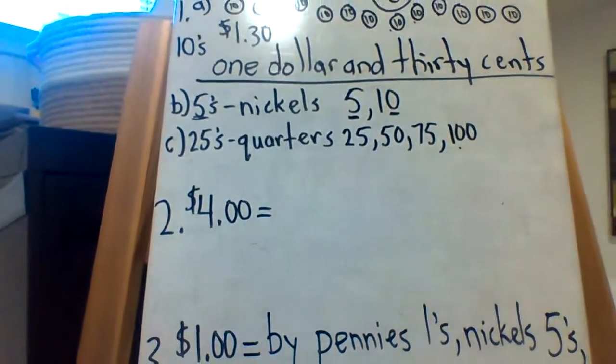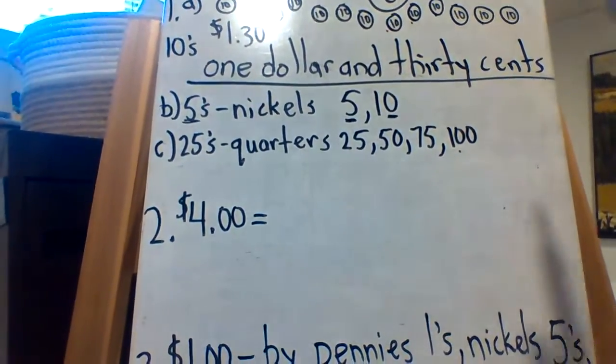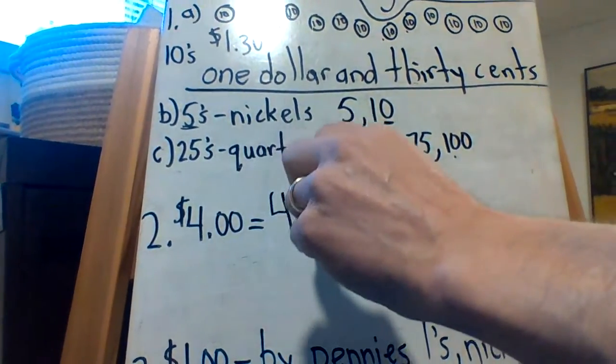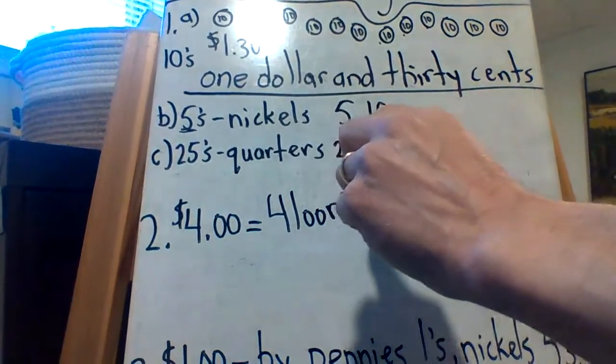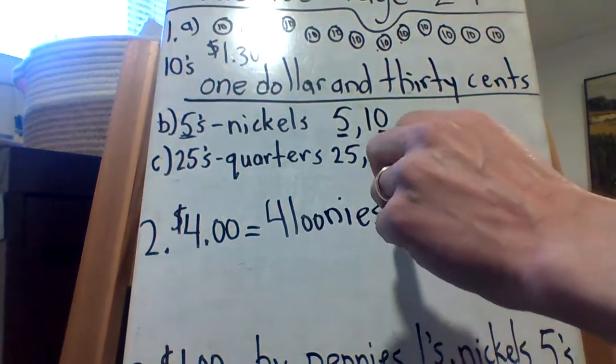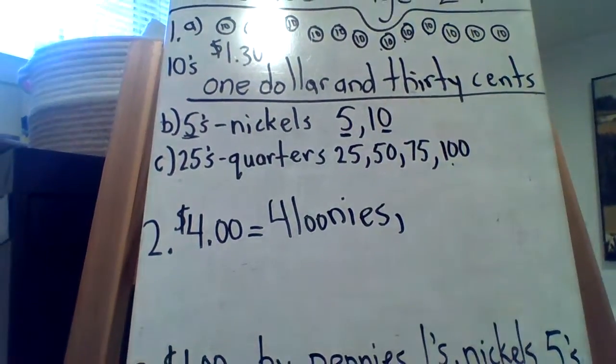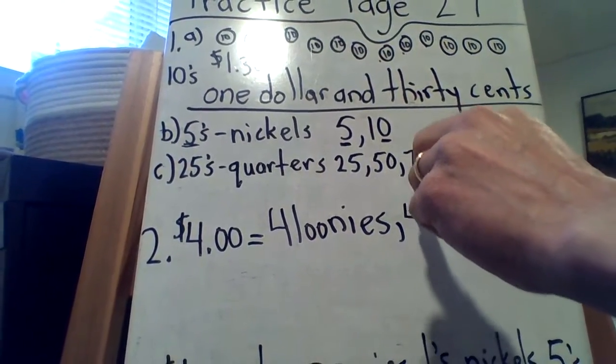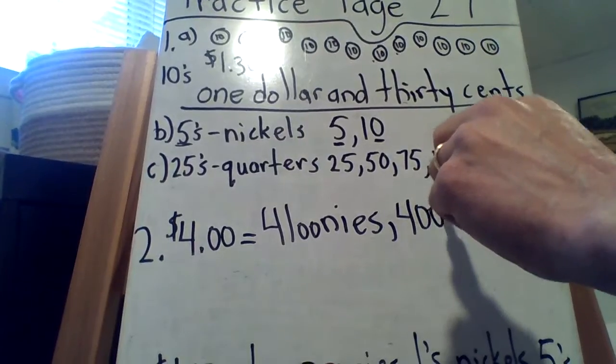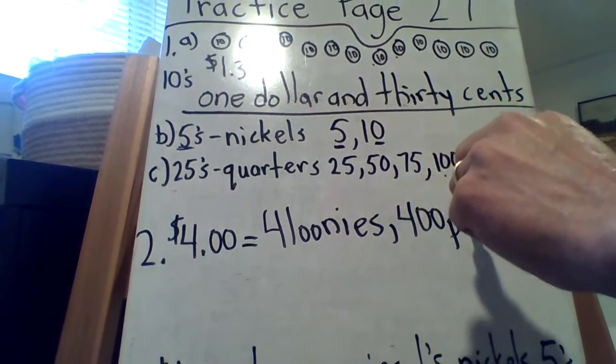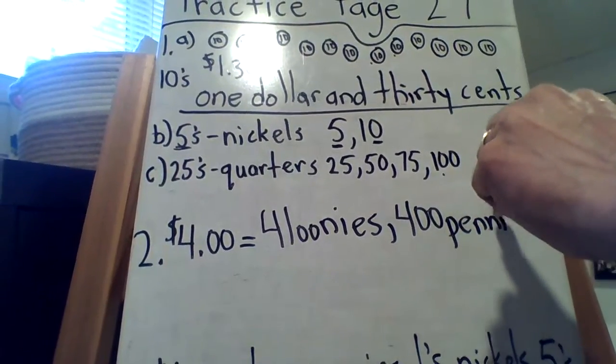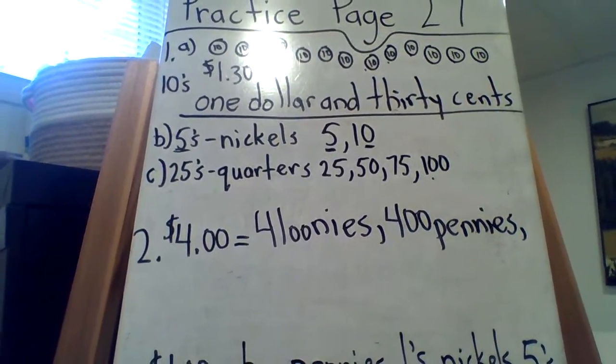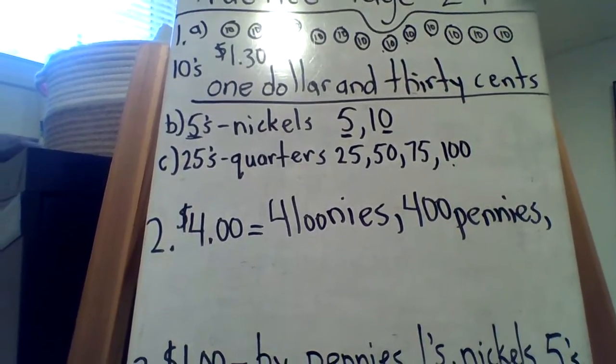Okay, so four dollars, probably the easiest one you can think of is four loonies, right? Four dollars is basically four loonies. That's an easy one. And another easy one, I would say, is four hundred pennies. And there are many more. So see if you can think of those and add on to that list. As many as you can. Try to use quarters, nickels, dimes,